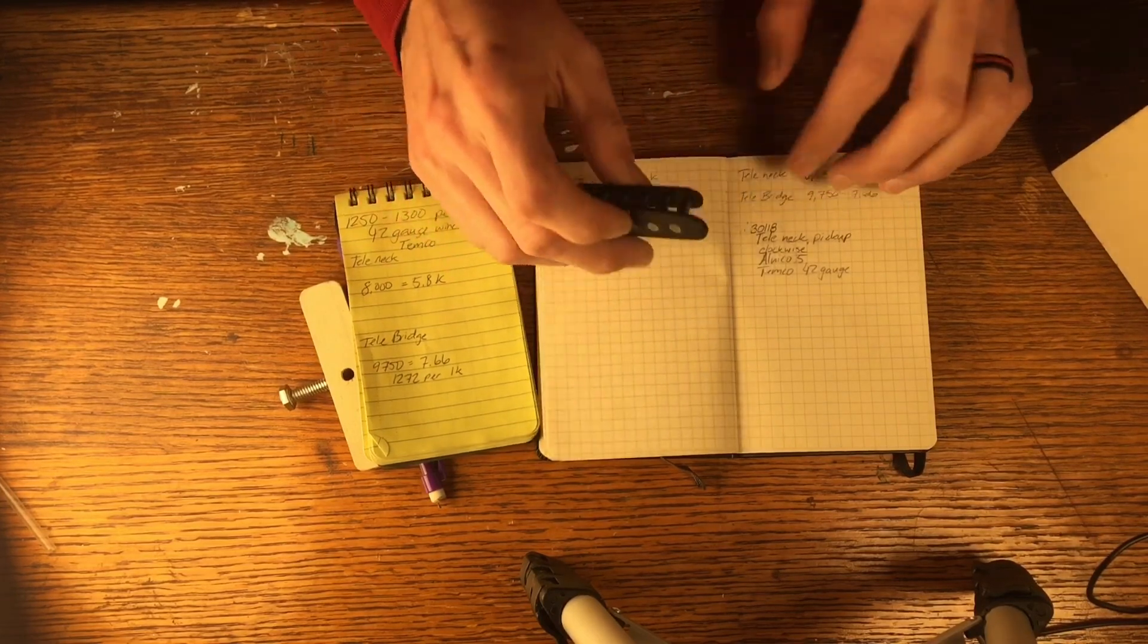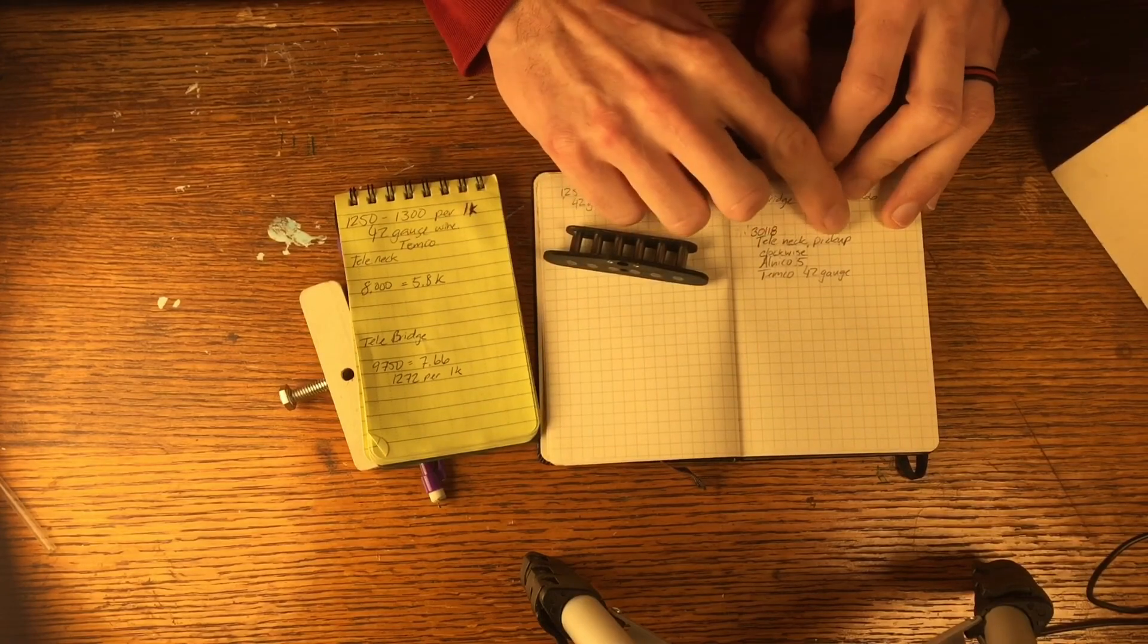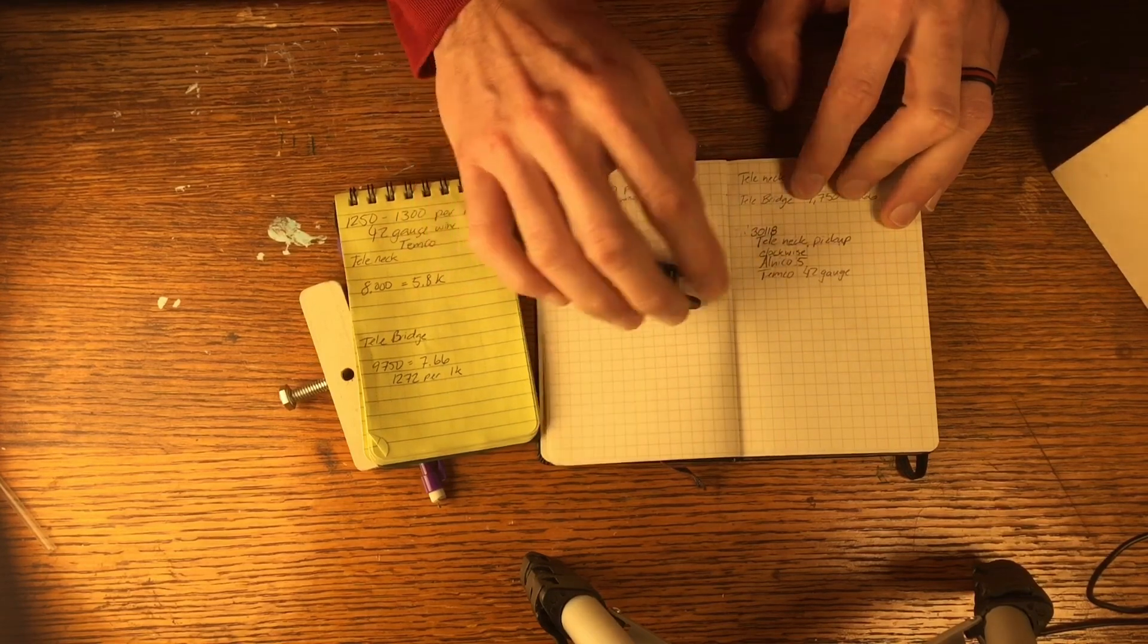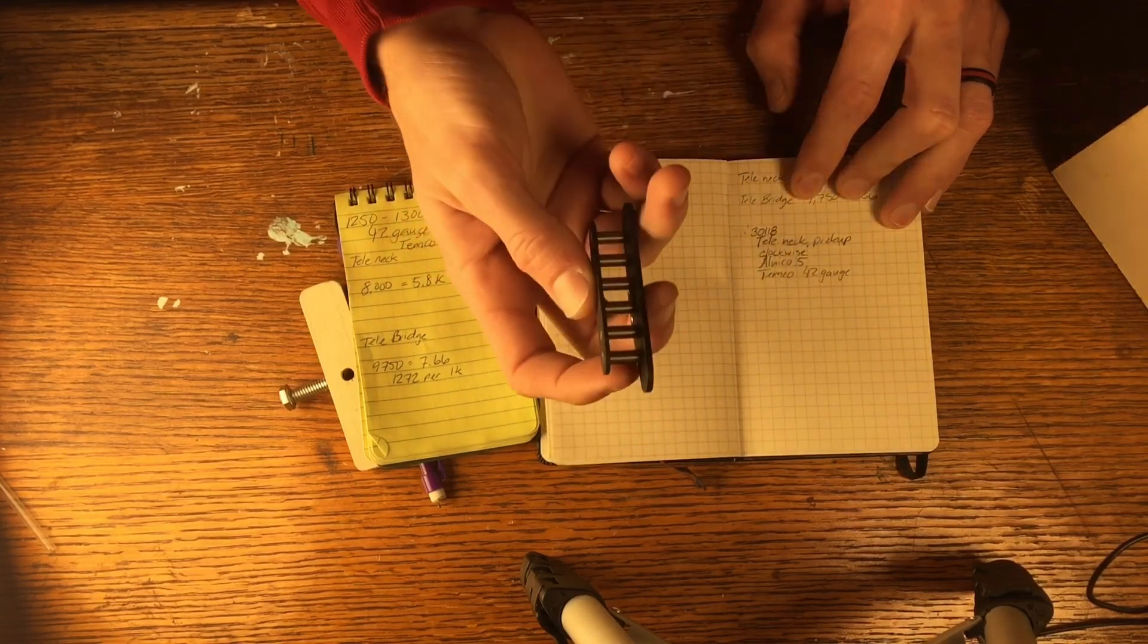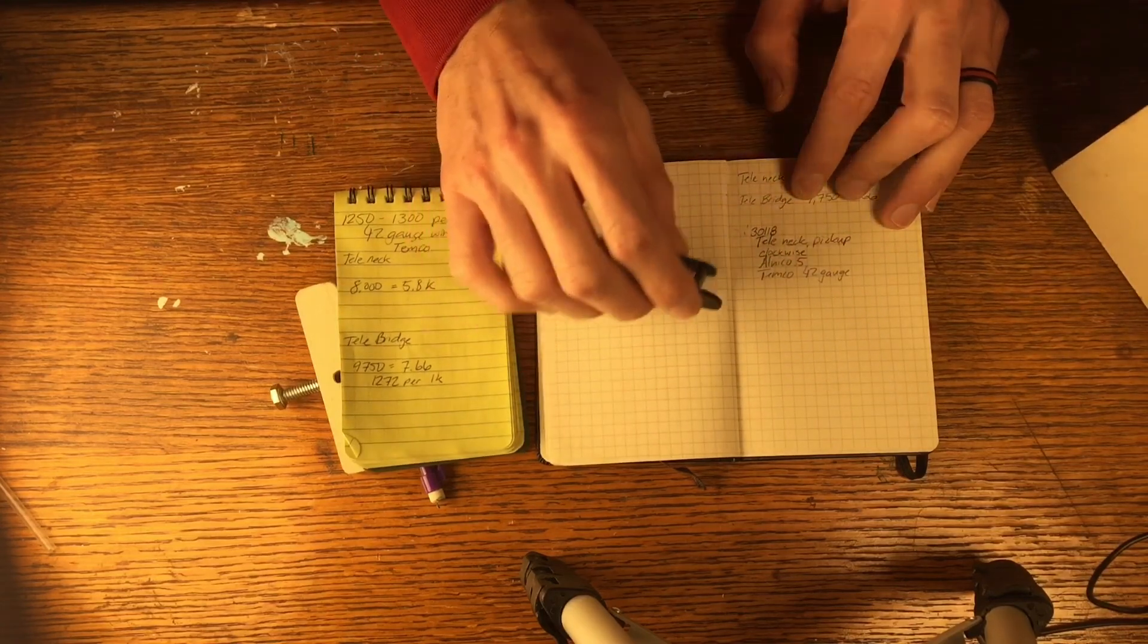So I'm gonna put that on here, maybe I might change it in the future, but I've put the name of the pickup and what kind of pickup it is. It's a Tele neck pickup. I'm gonna wrap it clockwise. I'm gonna use Alnico 5 pole pieces and I'm using Timco 42 gauge wire to wrap it.